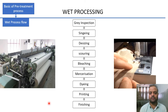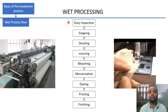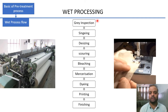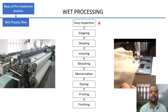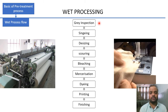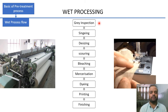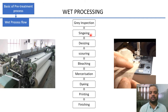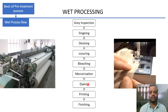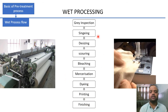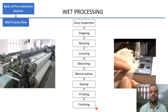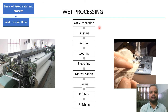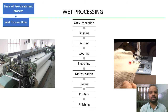Once the fabric comes out from the weaving machine, it goes into a wet processing house where the first treatment received by the grey fabric is grey inspection — a process of grading, visualizing defects, and allotting a number to particular defects to grade the fabric accordingly. After grey inspection, the next processes are singeing, desizing, scouring, bleaching, mercerization, dyeing, printing, and finishing. These are the nine different stages or pre-treatments that need to be provided to a woven grey fabric before it can be converted into a stitchable garment.